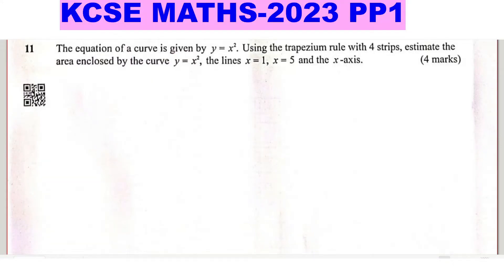Question 11: The equation of a curve is given by y equals x squared. Using the trapezium rule with four strips, estimate the area enclosed by the curve y equals x squared, the lines x equals 1, x equals 5, and the x-axis.